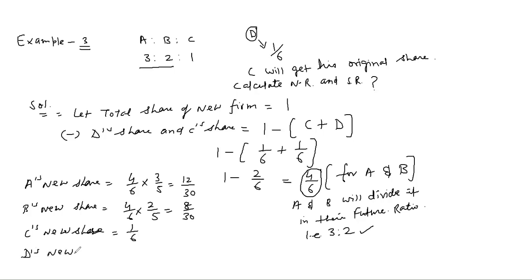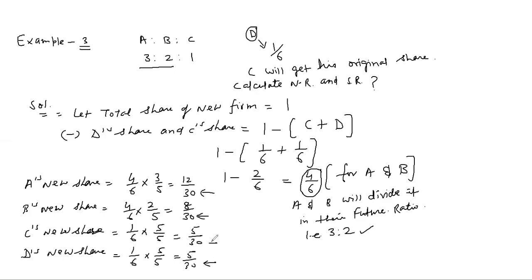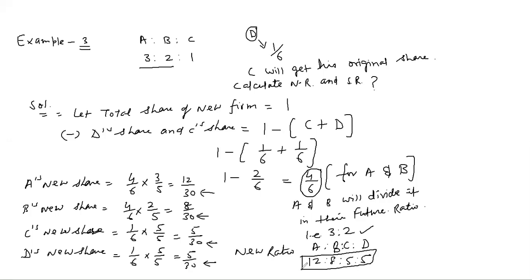D's new share is also fixed — he was admitted for 1/6. To bring all shares to a common base of 30, multiply C's 1/6 by 5/5 = 5/30, and similarly D's 1/6 = 5/30. You can also use LCM to equalize. Now all shares have base 30. So the new ratio of A:B:C:D = 12:8:5:5.